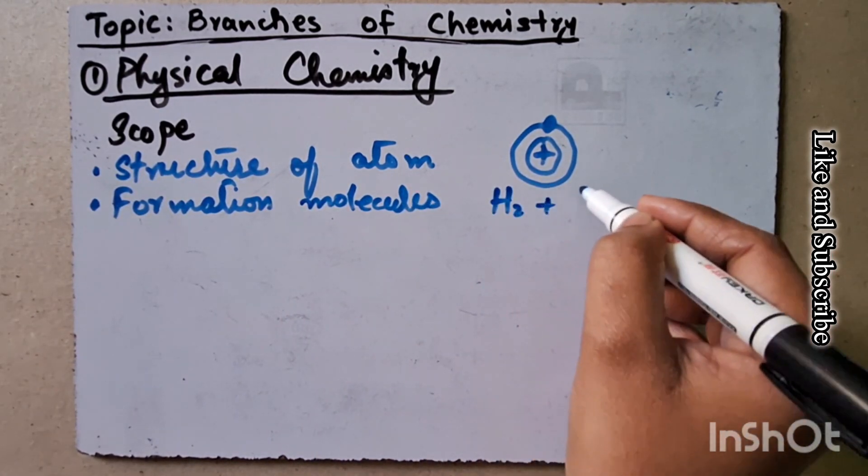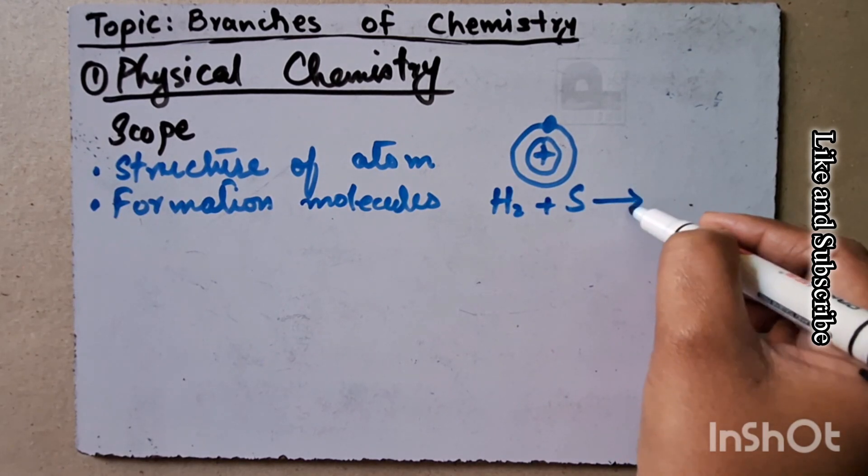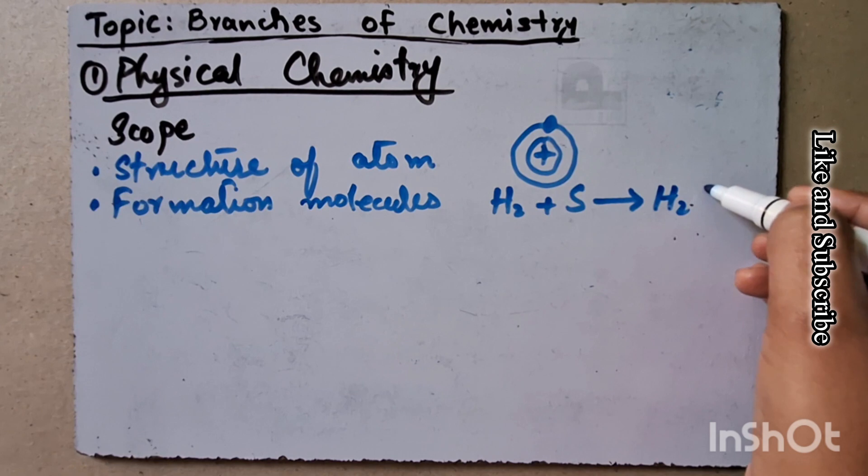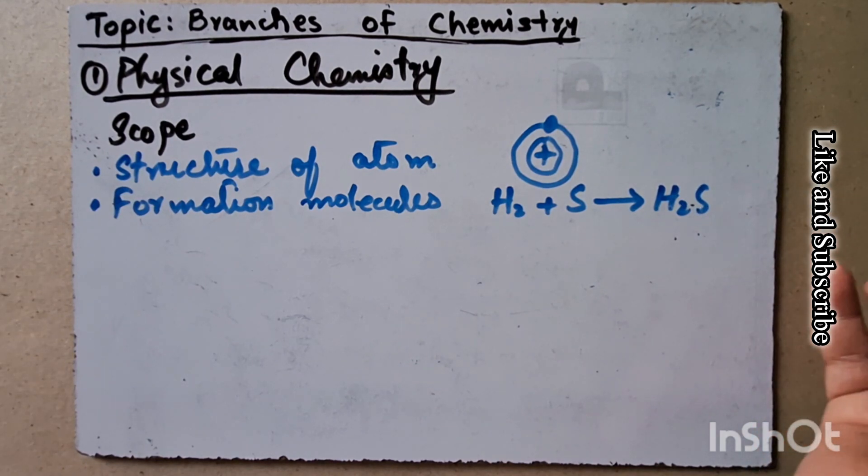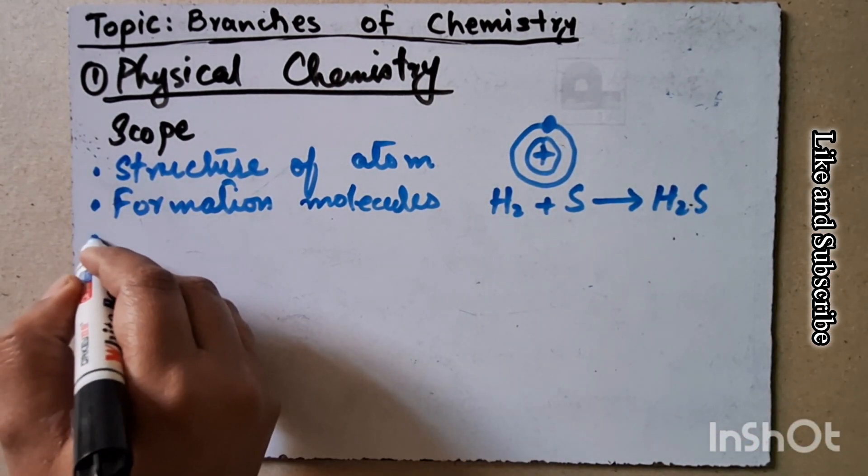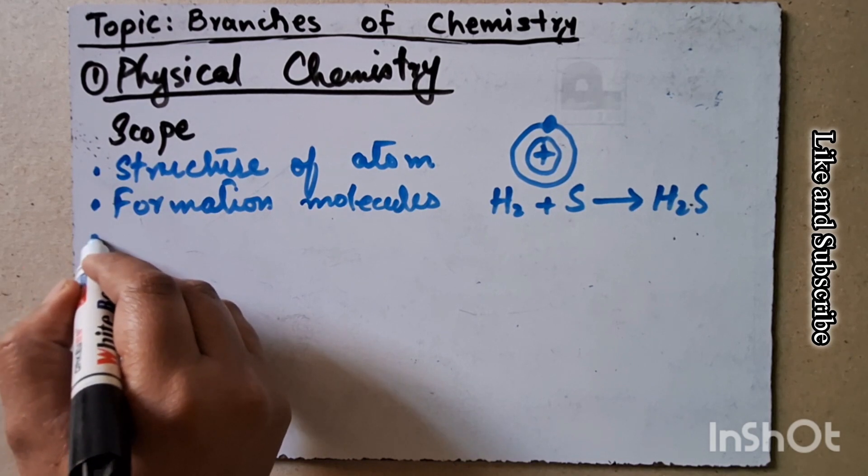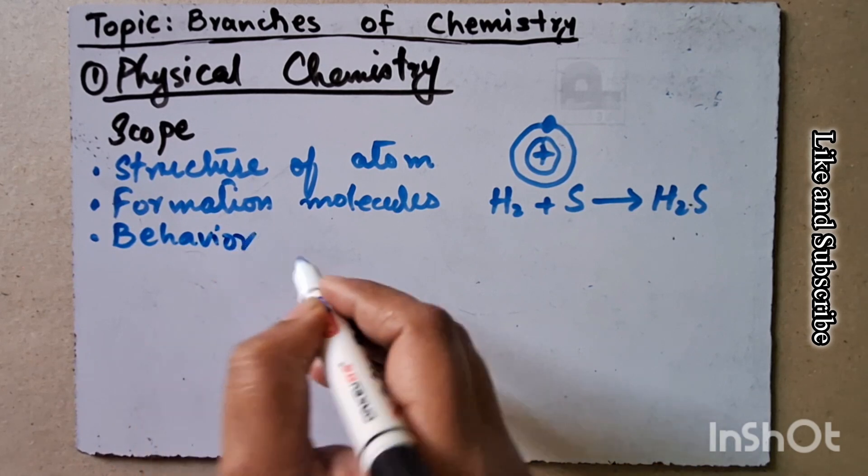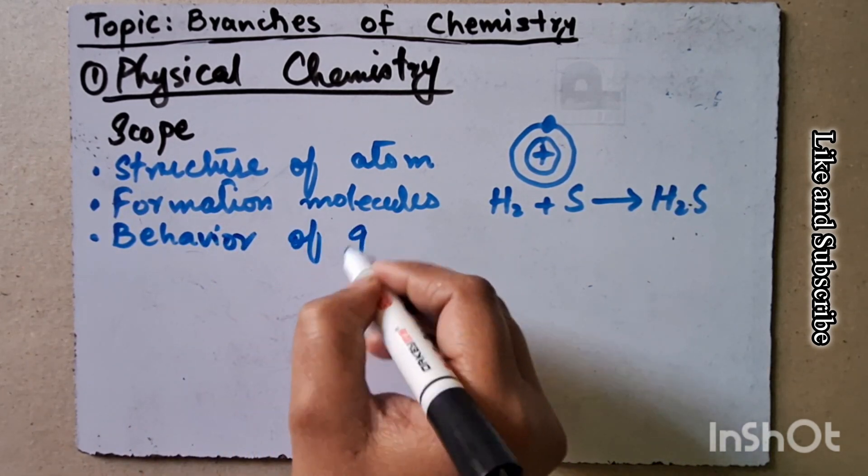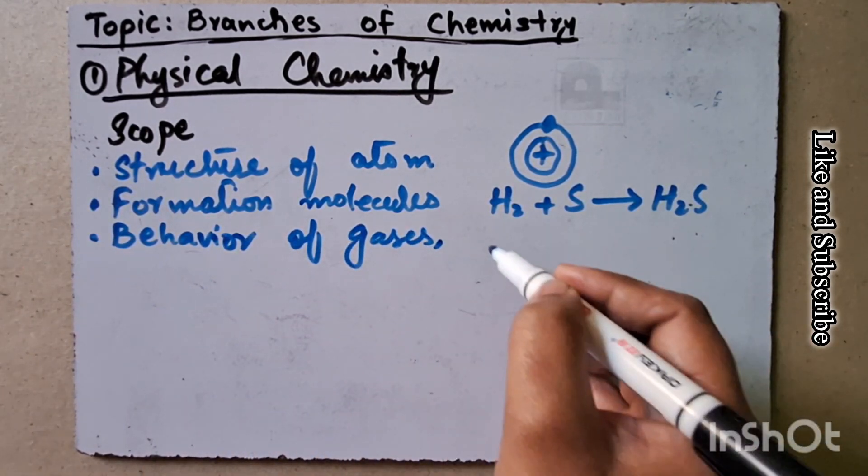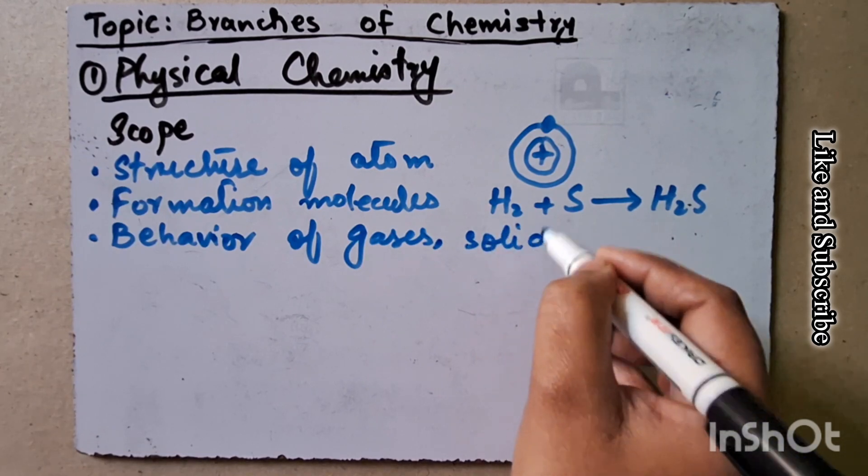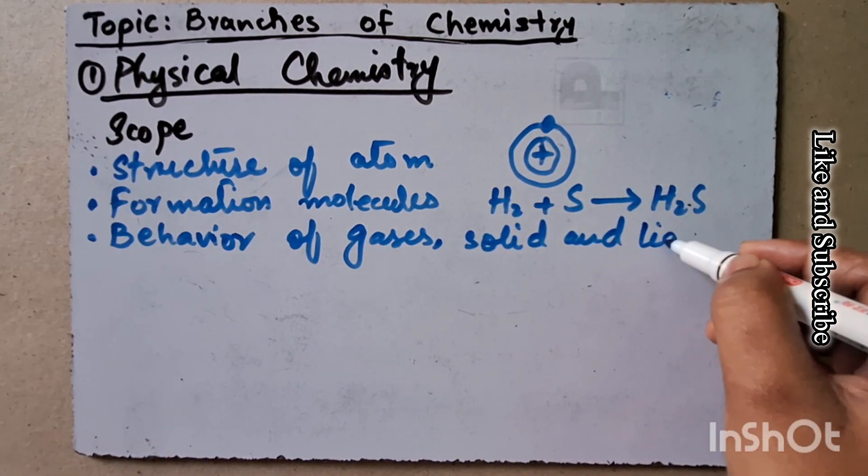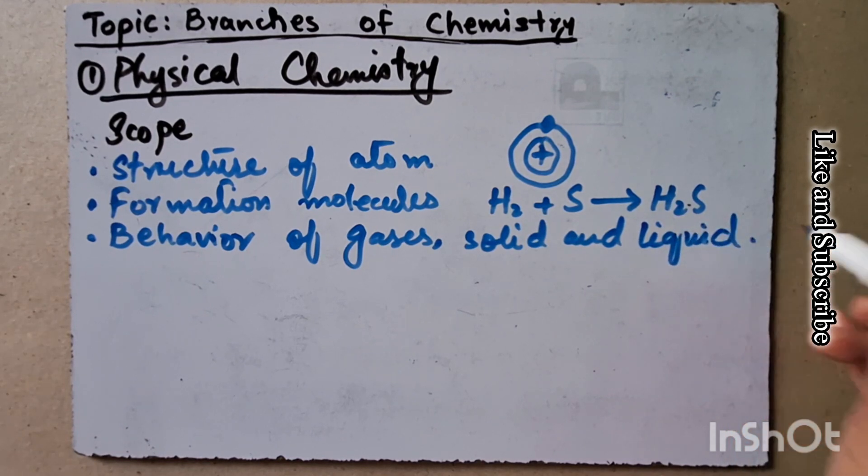For example, if we have hydrogen and sulfur, when we react them, we have hydrogen sulfide molecule. Number three is the behavior of gases, solids, and liquids, which we need to find out.